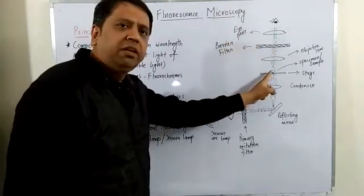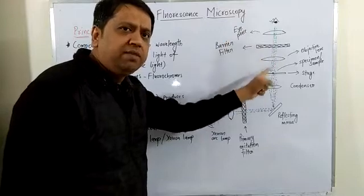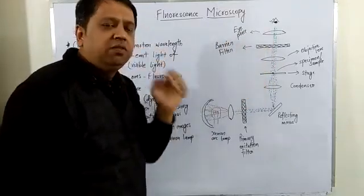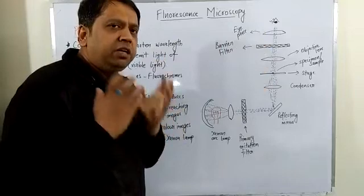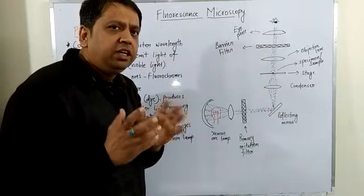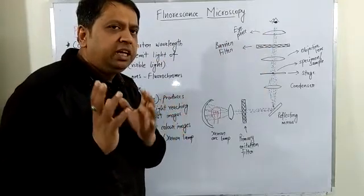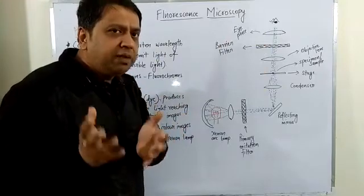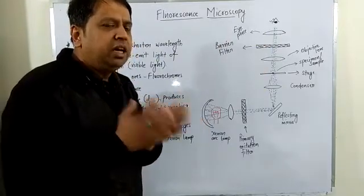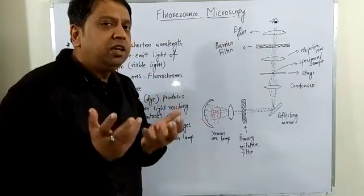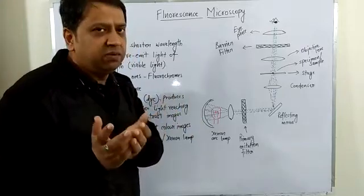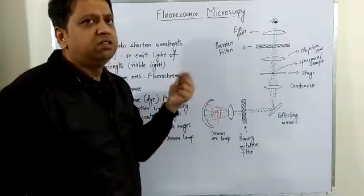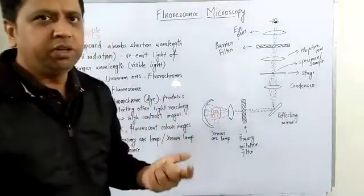This green light comes directly from the specimen or sample. The resulting image has a dark background with a highly fluorescent image of the specimen. This is the working principle of fluorescence microscopy.